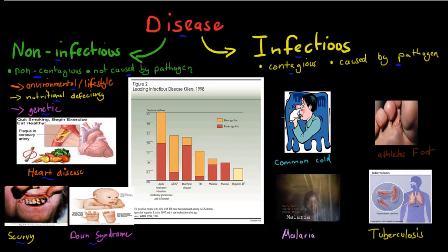Whereas infectious diseases are contagious and are caused by a pathogen. For example, the common cold, which most of you would have had — it's not dangerous, but it's caused by a virus. Athlete's foot is another example; some of you might have had that. It's non-dangerous, doesn't really hurt too much, and it's caused by fungi.